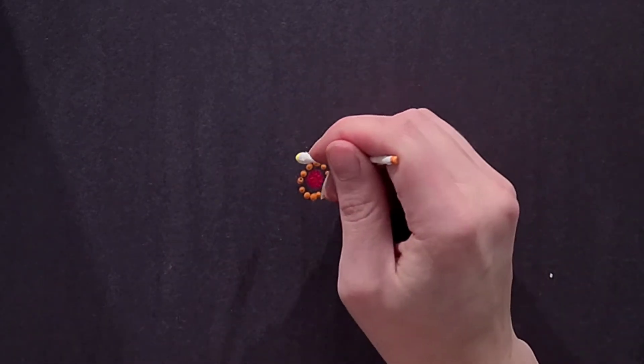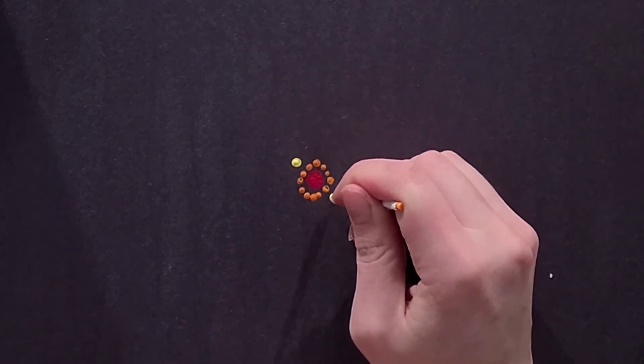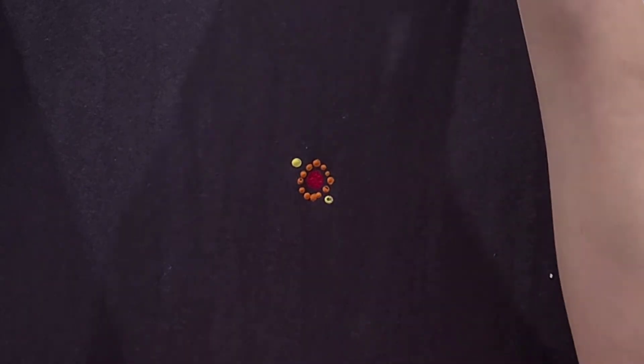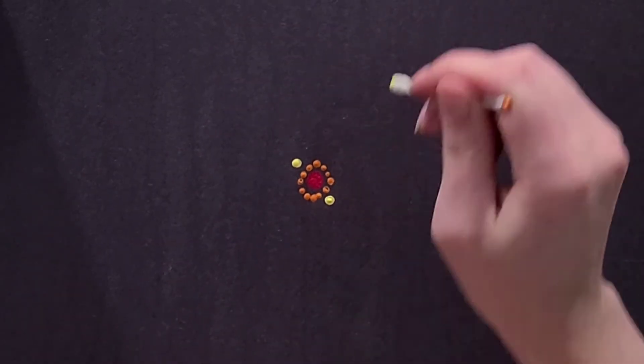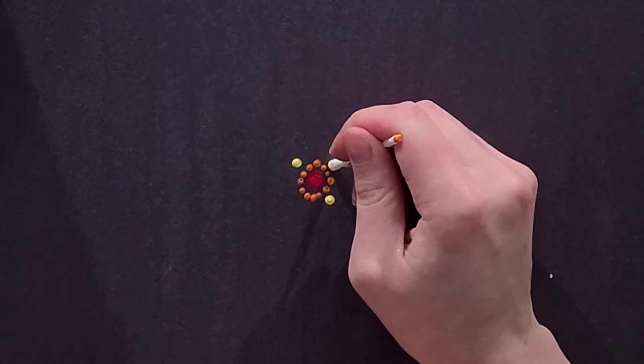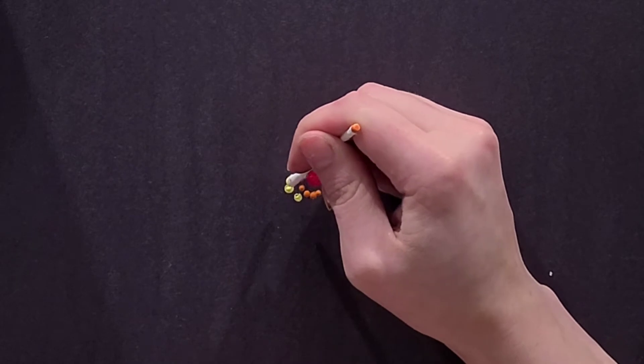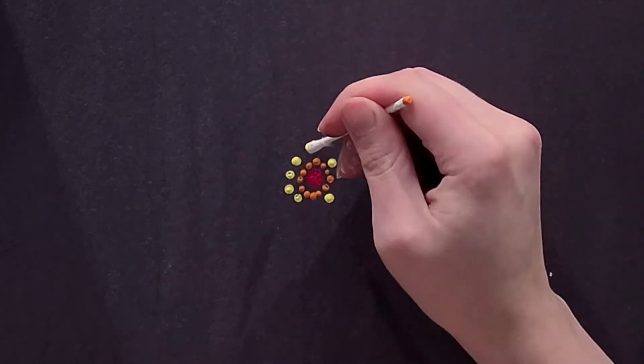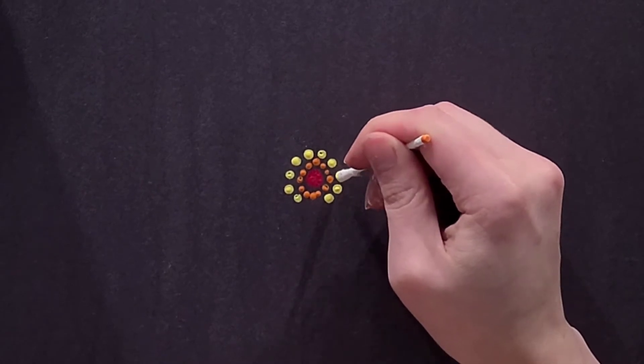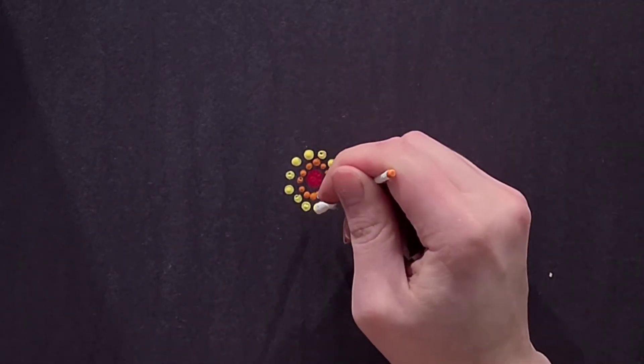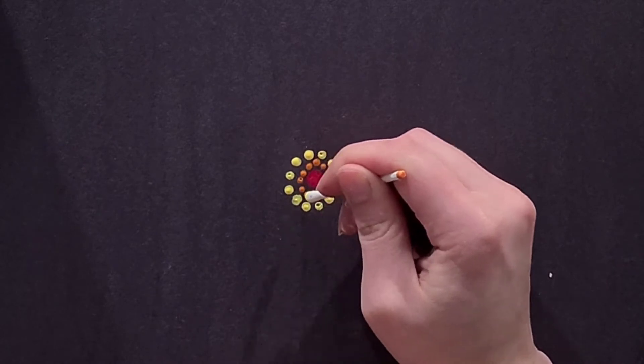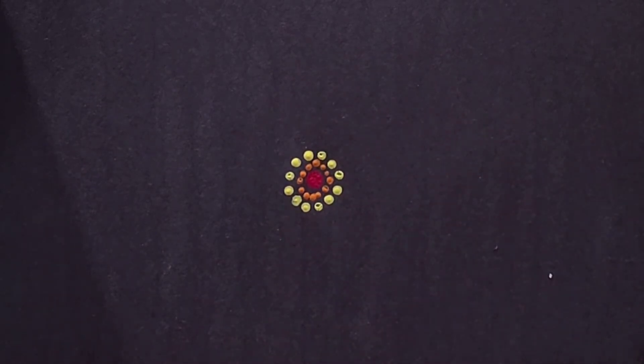All right then I'm going to take the next color which will be yellow. I'm going to do the same thing. I'm going to go dot, dot, dot, across. Then I'm going to go dot, dot, across. And then two in between. So again it's really just you keep building upon it and working your way out.